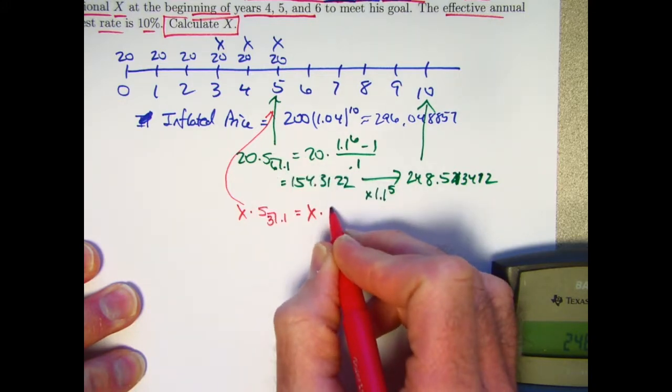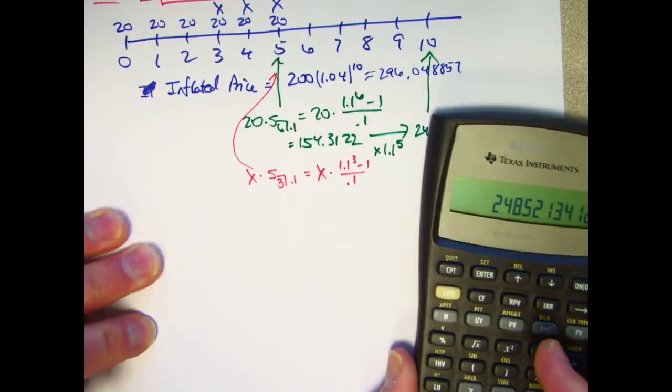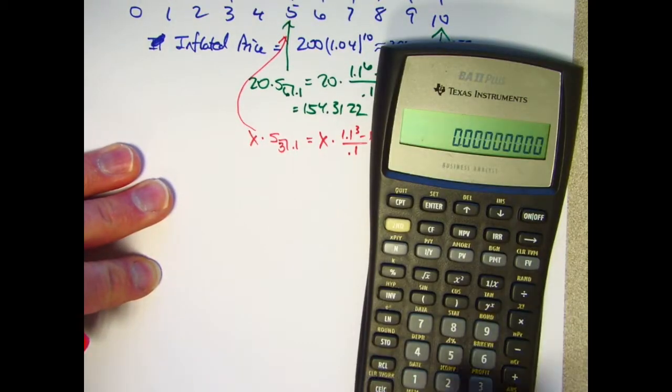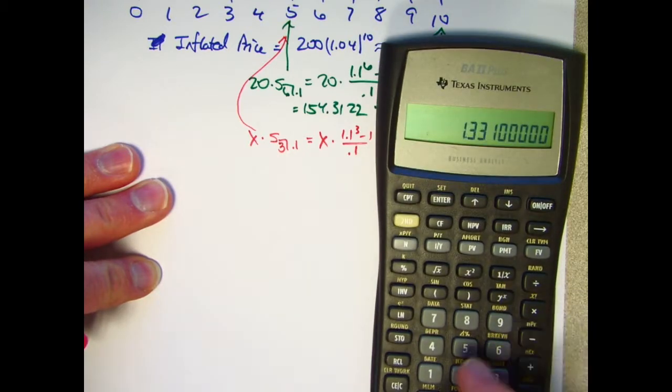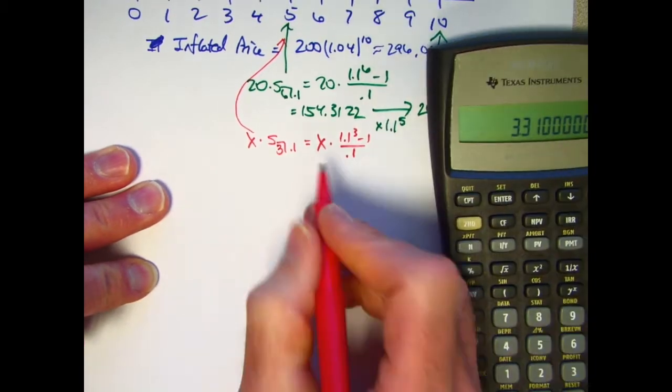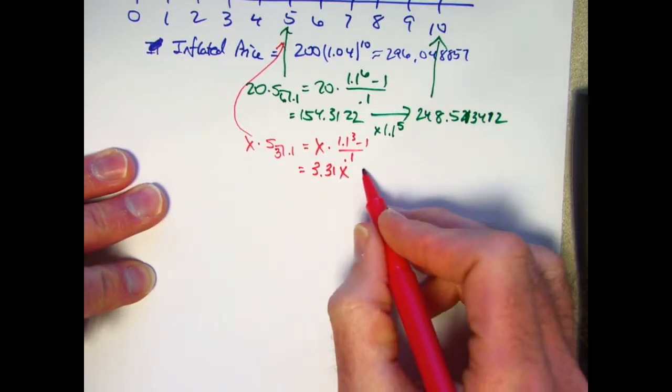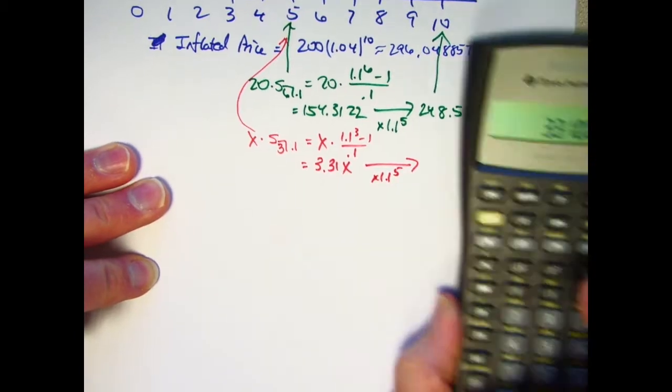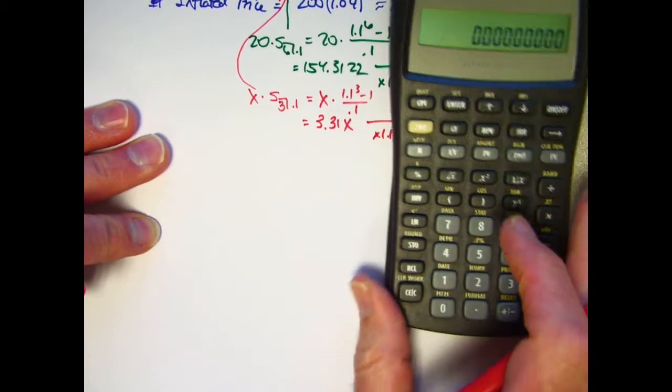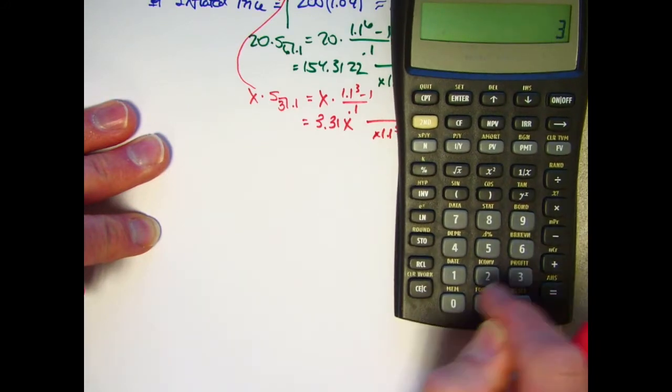So that future value will be 1.1 to the 3rd power minus 1 divide by 0.1, 3.31 times x. But once again, that needs to get promoted another five years. Multiply that by 1.1 to the 5th again.